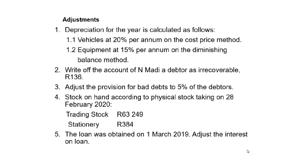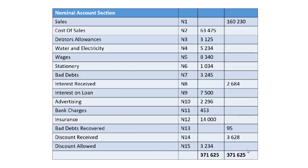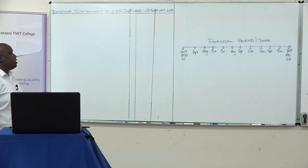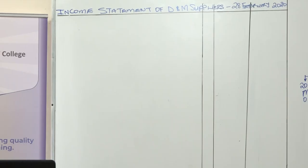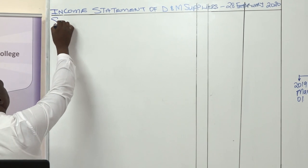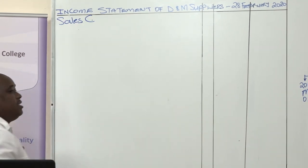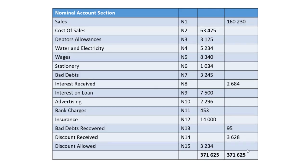The first thing we need to do is record our sales or turnover for the year. We get that from the pre-adjustment trial balance. According to our pre-adjustment trial balance, the sales amount shows 160,280. If you check our whiteboard, we've got the layout that will be used to complete our income statement for the year. The company we'll be working with is called D&M Suppliers.